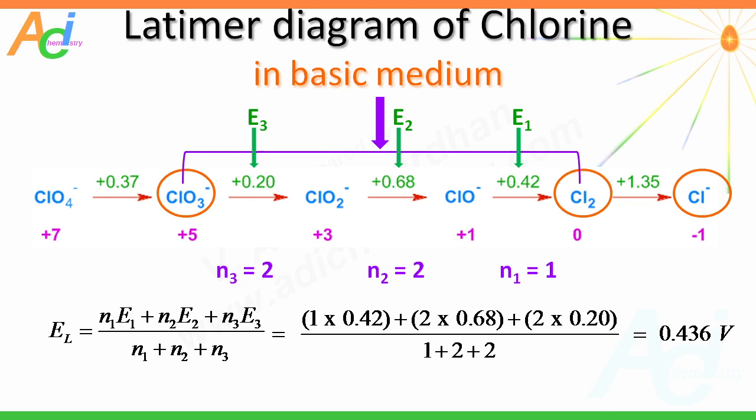This value of 0.436 V is less than the electrode potential for the reduction reaction from chlorine to chloride ion. Hence, the disproportionation of chlorine to chloride and chlorate ions is thermodynamically feasible.